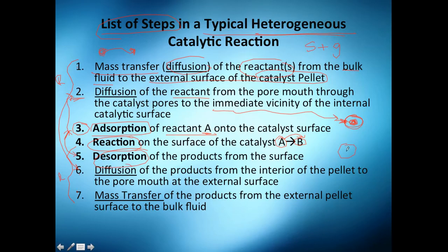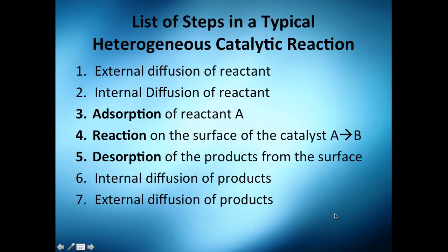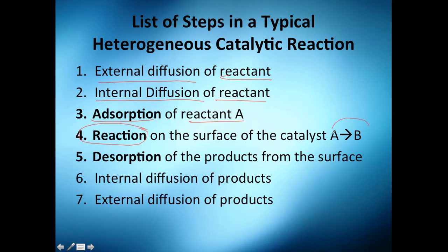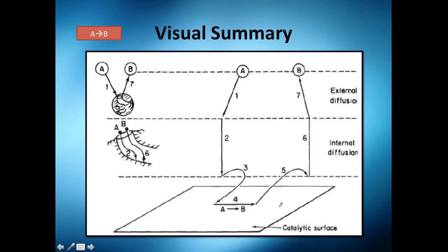Once we have our product and it's desorbed, we have step six: internal diffusion of the product going from inside to outside the pellet. Then step seven: external diffusion of the product from the pellet surface to the bulk fluid. So in summary: external diffusion of reactant, internal diffusion of reactant, adsorption, reaction, desorption of product, internal diffusion of product, and external diffusion of product.